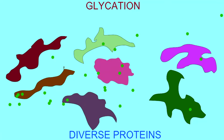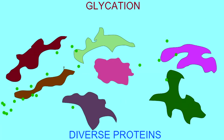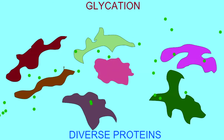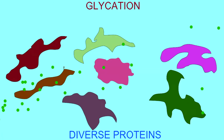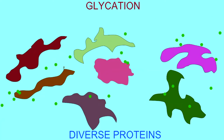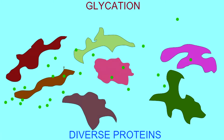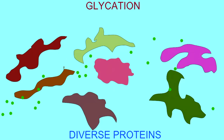Enzymes do not induce glycation. These are random reactions which occur with proteins and lipids and circulating monosaccharides.